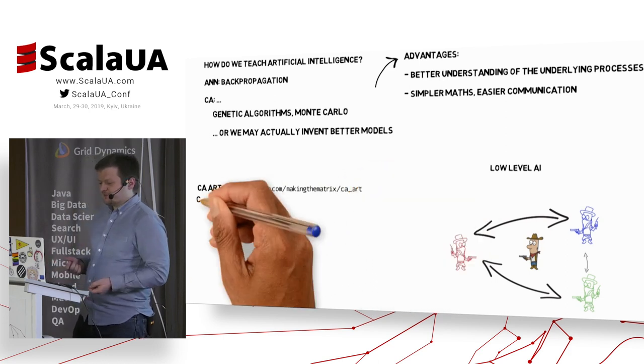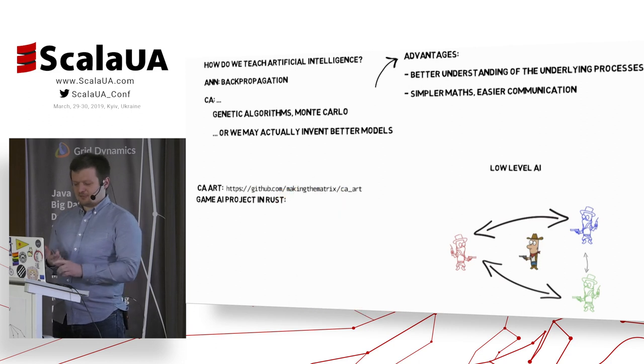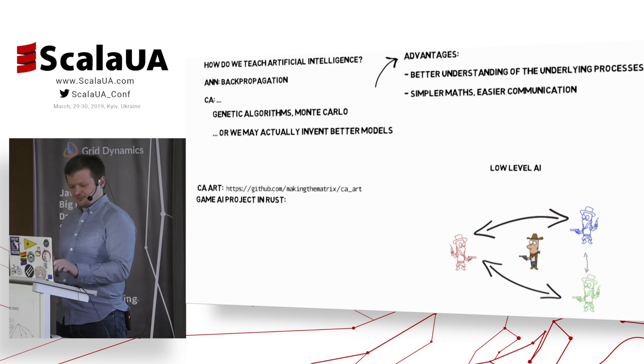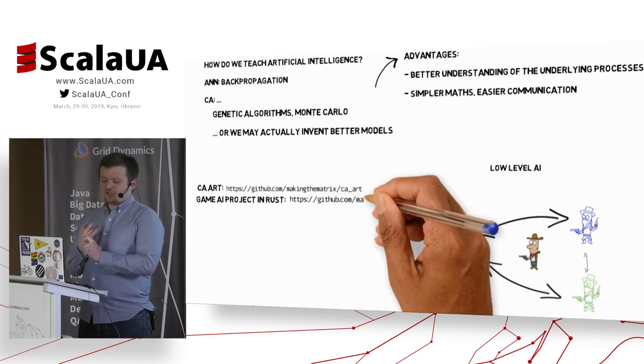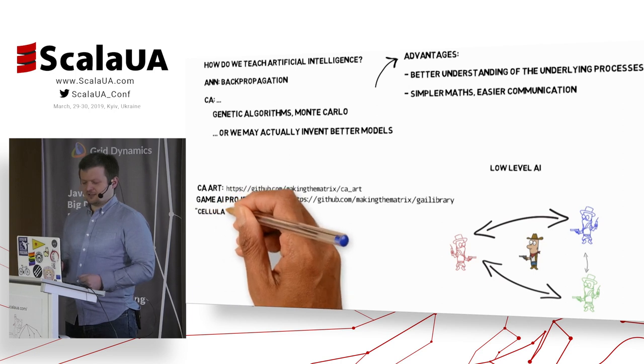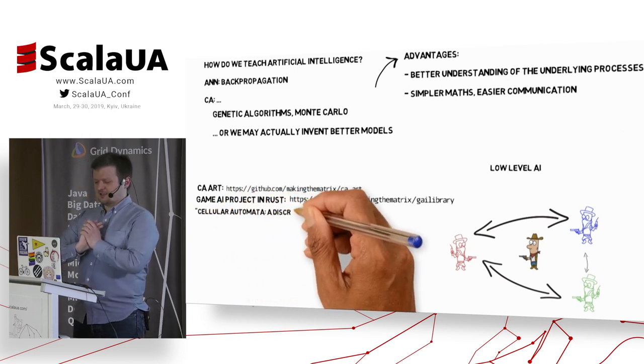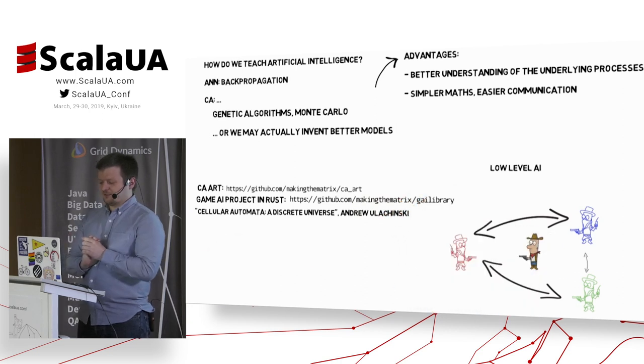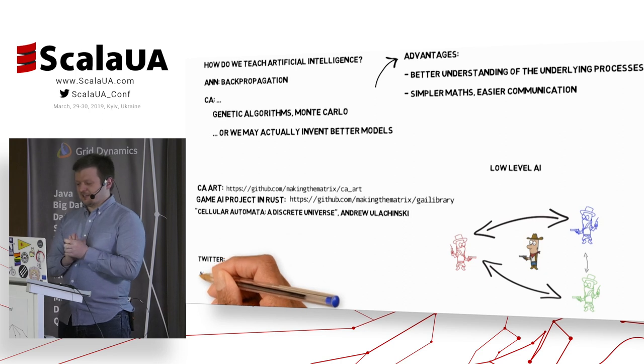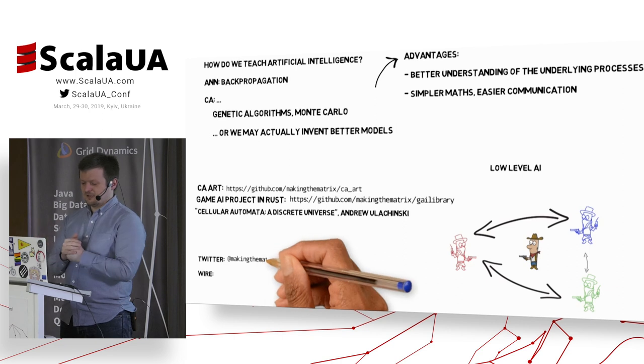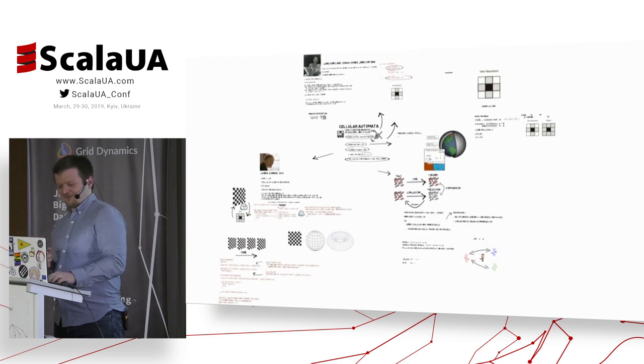You can see the examples and the code and the documentation on GitHub in GitHub.com, making the magic CA art repository. And I'm working on rewriting this code in Rust and moving it a bit into that low-level AI territory with this. And usually, most of the things I told you, I got from the book Cellular Automata, a Discrete Universe by Andrzej Ulachiński. You can find me on Twitter, on Wire, and you can talk to me right now. So, thank you.